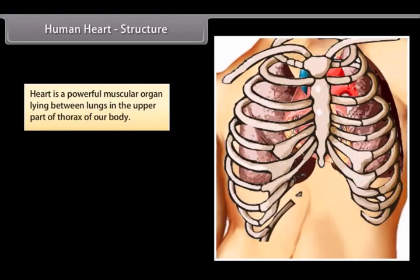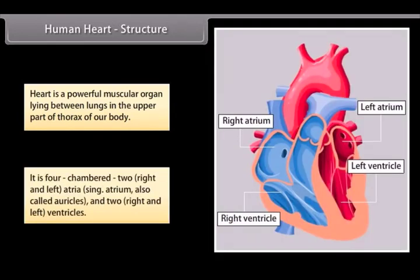Human heart. Structure. Heart is a powerful muscular organ lying between lungs in the upper part of thorax of our body. It is four chambered: two right and left atria, also called auricles, and two right and left ventricles.